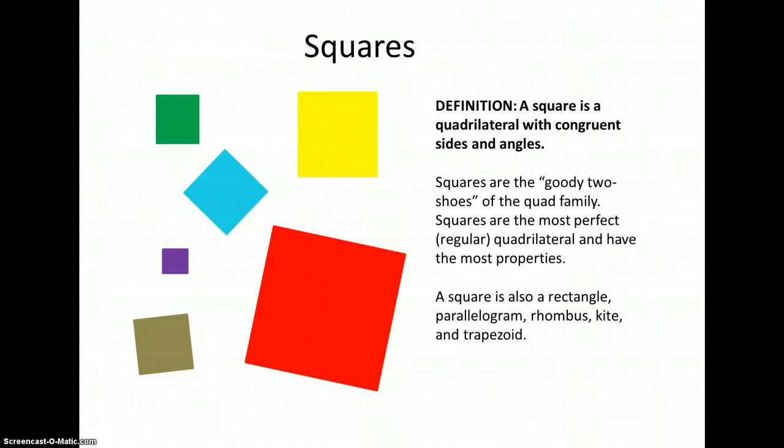A square is also a rectangle, a parallelogram, a rhombus, a kite, and a trapezoid. It is the very specific one of each of those.